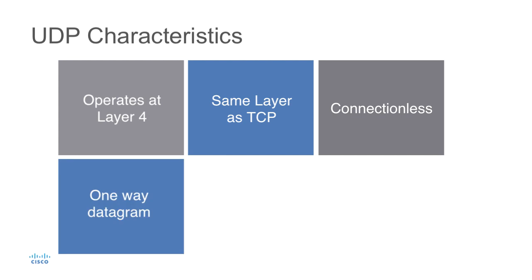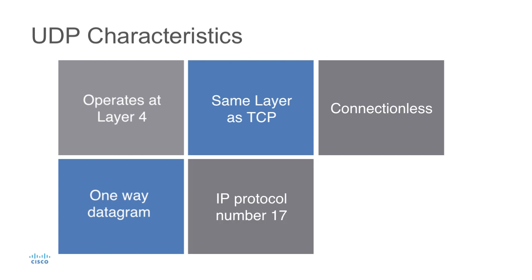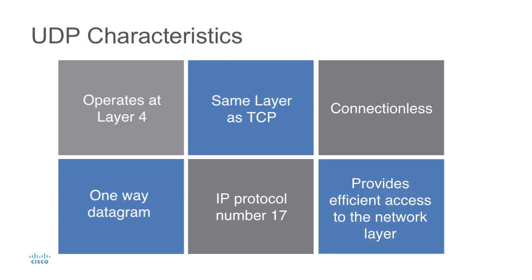It is a one-way datagram — it doesn't establish a full duplex mode of communication. UDP uses IP protocol number 17, so if we were to go down a layer and look at an IP header, the protocol field would point to protocol 17. UDP provides us efficient access to the network layer without the overhead that we would see with TCP.